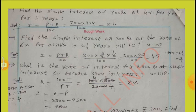Find the simple interest on Rs.300 at the rate of 6% per annum for 2 and a half years. Solution: I equal to PTR by 100. Here, P equal to 300, T equal to 2½ years expressed as the fraction 5 by 2. Calculating: 300 into 5 by 2 into 6 by 100. By simplification, we get I equal to Rs.45.